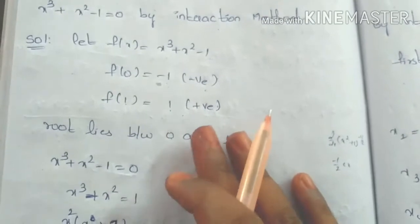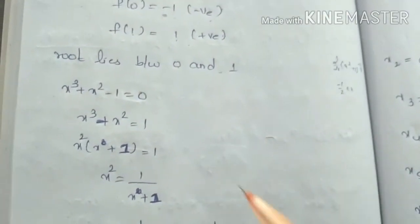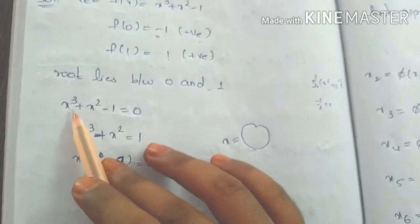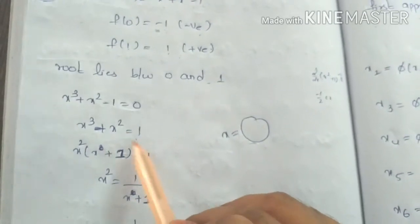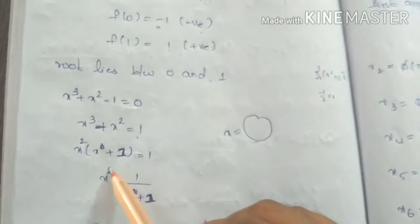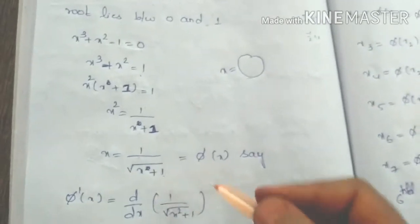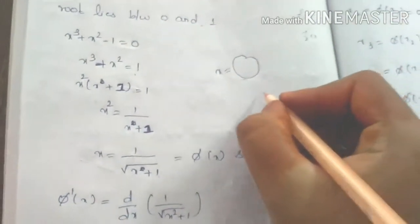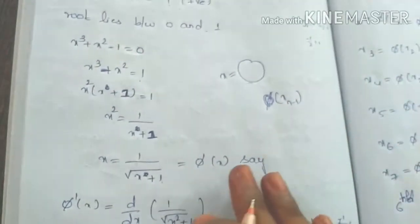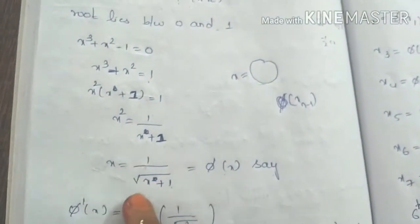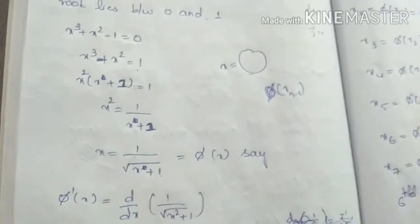The root lies between 0 and 1. Now we rearrange x cubed plus x squared minus 1 equals 0 to get x cubed plus x squared equals 1. Factoring out x squared: x squared times (x plus 1) equals 1, so x squared equals 1 divided by (x plus 1), giving x equals 1 divided by the square root of (x plus 1). So phi of x equals 1 over the square root of (x plus 1).